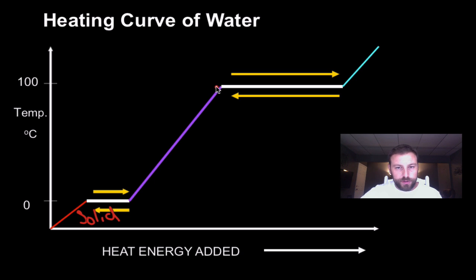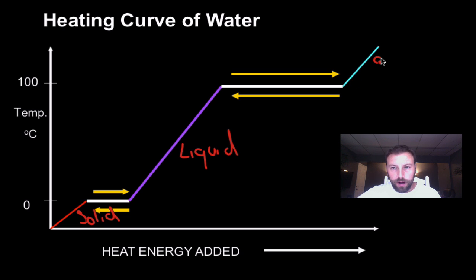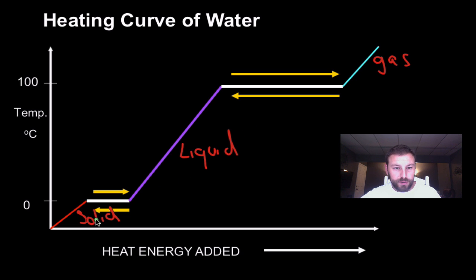You notice it goes to 100 degrees Celsius. So water between zero and 100 degrees Celsius is a liquid as we know it. So we get to about 100 degrees Celsius, and once again, there's no change of temperature for a while, and then the temperature starts to increase. At above 100 degrees Celsius, we have a gas. So we have solid below zero degrees Celsius, liquid between zero and 100 degrees Celsius, and then gas above.